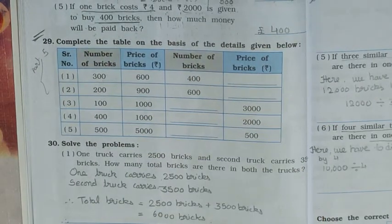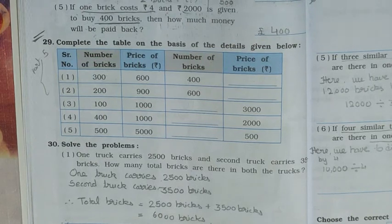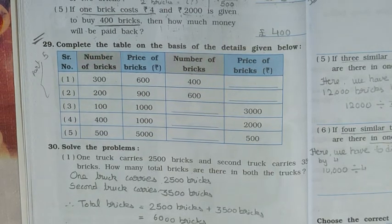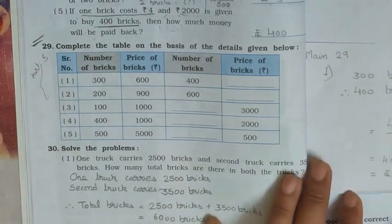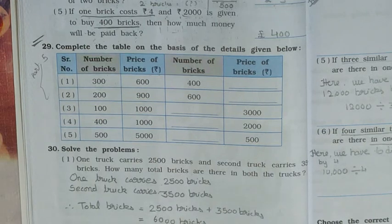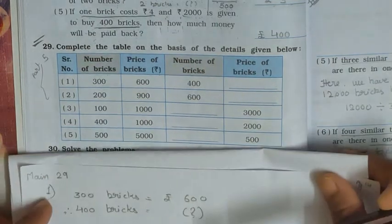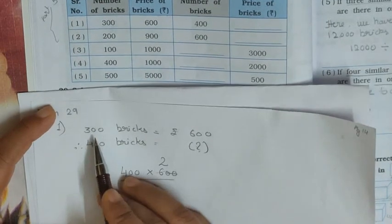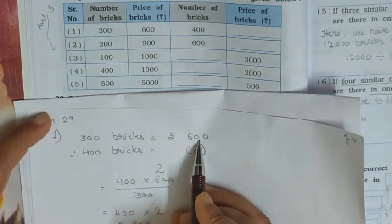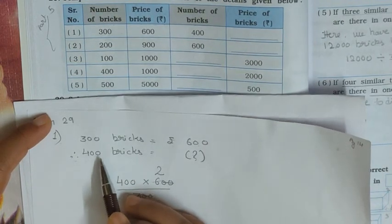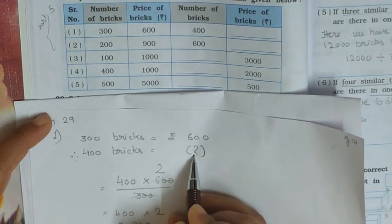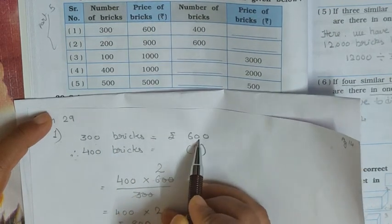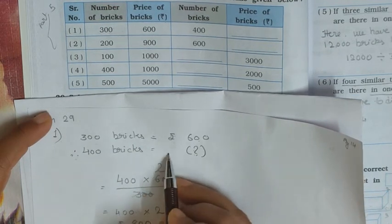I have to do some calculations here that I will show you. First one: 300 bricks is equal to Rs. 600. Therefore, 400 bricks is equal to how much? Given that if the price of 300 bricks is equal to Rs. 600, then the price of 400 bricks is equal to how much?